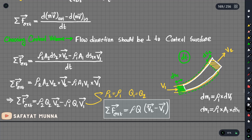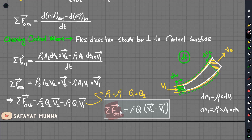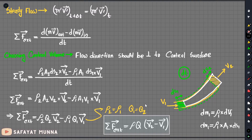Now look at this vector equation — we only need to use the component form. To sum up everything, we will use fluid density multiplied by the discharge rate multiplied by (V2 minus V1). We will take this formula in the next video, applying it to the stationary pressure conduit problem as a math problem.